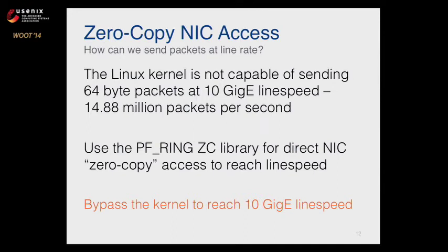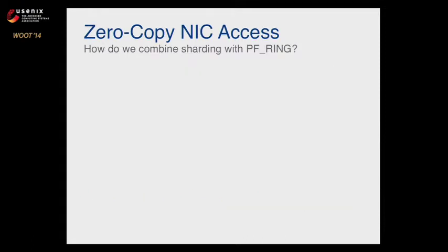How do we actually send packets at line rate? The big issue with sending packets at 10 gig is that the SYN packets we're sending are the minimum size packets — about 64 bytes on the wire. The Linux kernel just can't keep up. It can saturate a 10 gigabit connection with larger packets but not with these minimum size packets. So we use PF_RING ZC — zero copy direct NIC access via DMA — bypassing the kernel and talking directly to the driver. This is a library built by a company called NTOP, and it allows us to bypass the kernel to reach 10 gig line speed, but only if we can create packets fast enough.